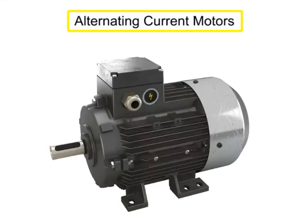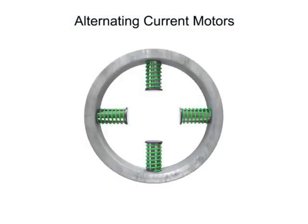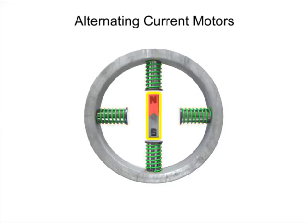Alternating current motors function based upon the principle of having polarities within a rotating magnetic field. Inside an AC motor are housed stationary electromagnetic coils, or stators, positioned around a movable magnet called a rotor.